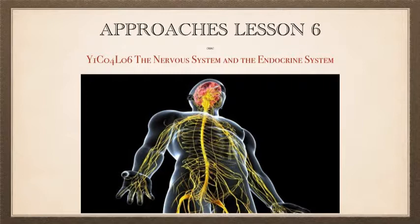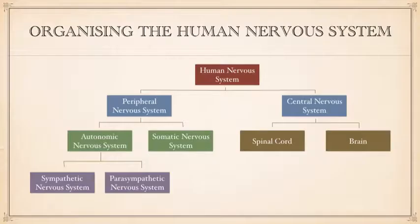The first topic we're going to look at is the nervous system and the endocrine system. The first thing you need to know about the nervous system is that it is made up of a network of cells in the human body and it's our internal communication system. It has two main functions: the first is to collect, process and respond to information in the environment, and the second is to coordinate the working of different organs and cells within the body.